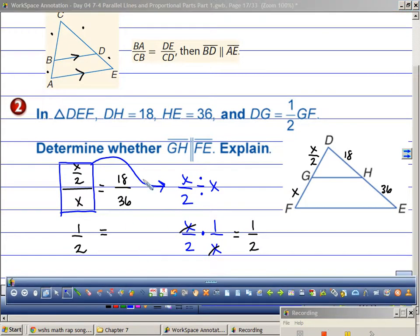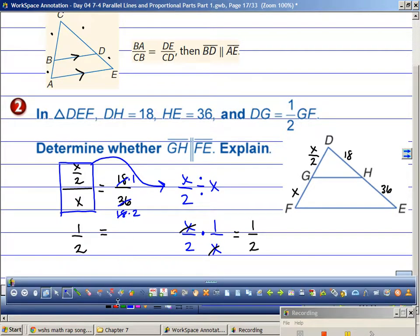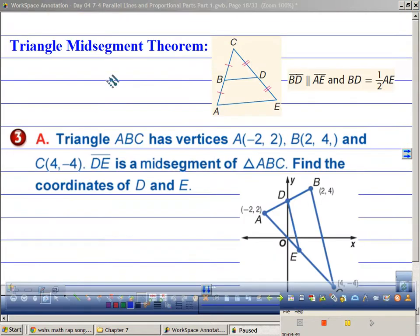Check this out. 18 is 18 times 1. Isn't 36, 18 times 2? Cancel the 18s. Isn't this also 1 half on this side? Are they proportional? Yes. Therefore, this is parallel with this.